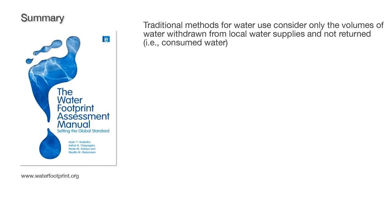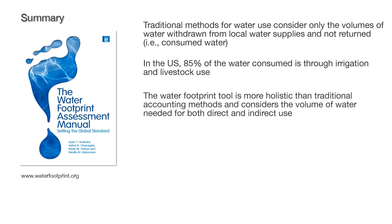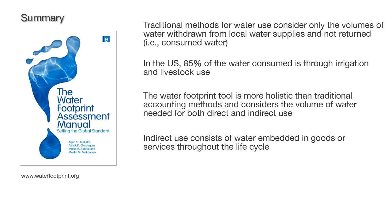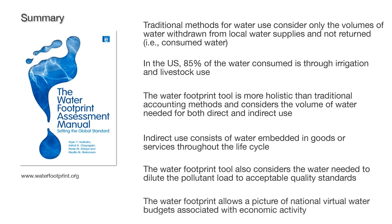Traditional methods for water use consider only the volumes of water withdrawn from local water supplies and not returned. In the United States, 85% of the water consumed is through irrigation and livestock use. The water footprint tool is more holistic than traditional accounting methods and considers the volume of water needed for both direct and indirect use. Indirect use consists of water embedded in goods and services throughout the life cycle. The water footprint tool also considers the water needed to dilute the pollutant load to acceptable quality standards, allowing a picture of national virtual water budgets associated with economic activity.